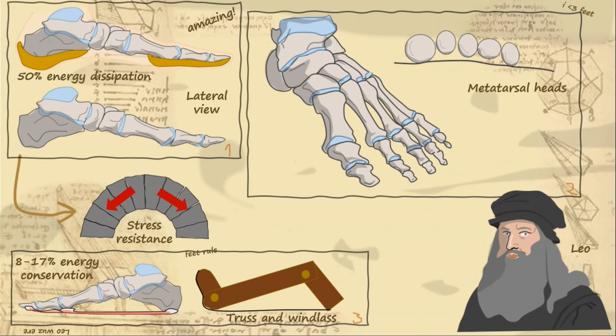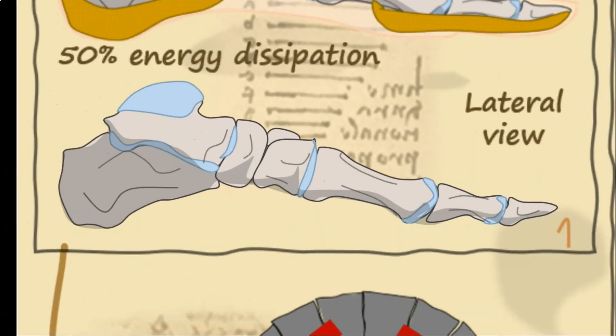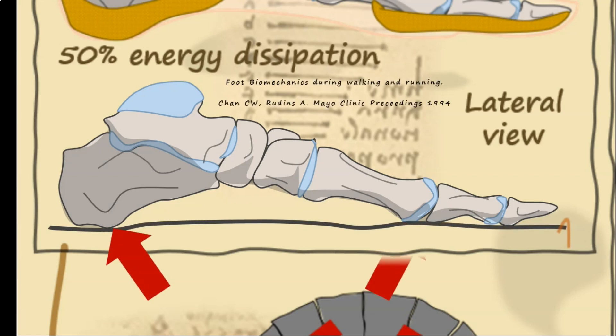Looking at the arrangement of the bones in the foot, we can see that the only parts of the entire structure to directly contact the ground are the bottom of the calcaneus and the heads of the metatarsals.